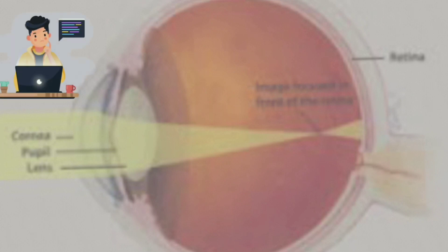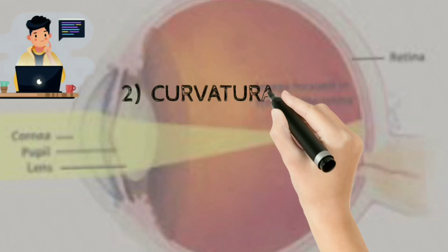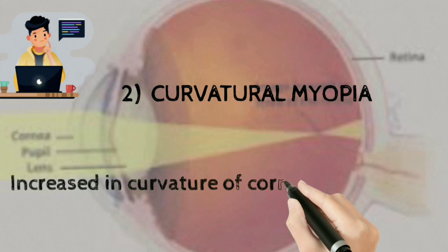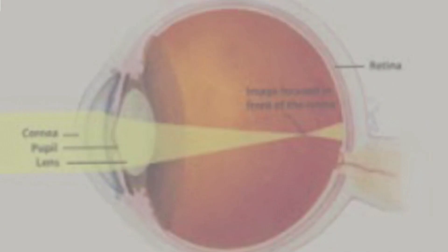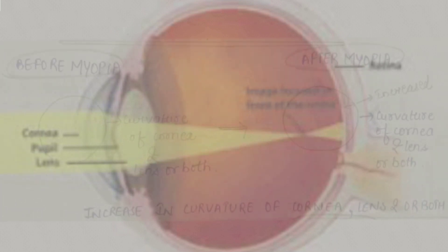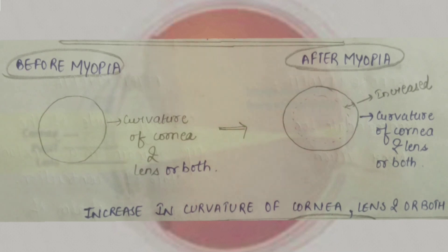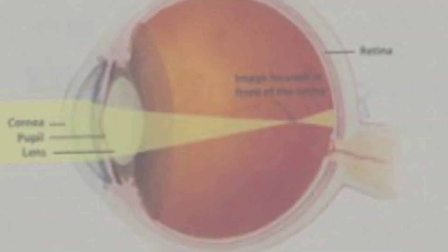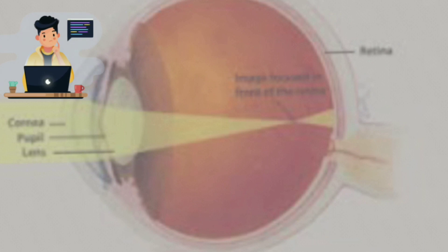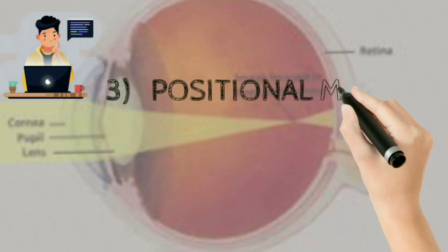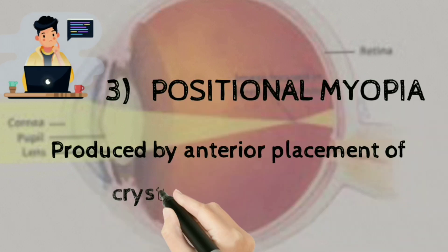The second type is curvature myopia, which is due to an increase in curvature of the cornea, lens, or both. As seen in the images, before myopia the condition of a normal patient is like this, and after myopia the curvature is increased — it may be of the cornea or of the lens, as drawn in the diagram.